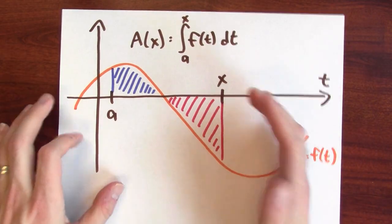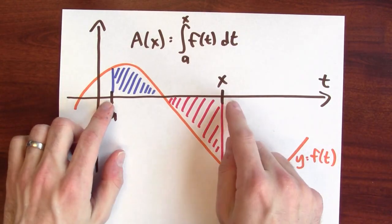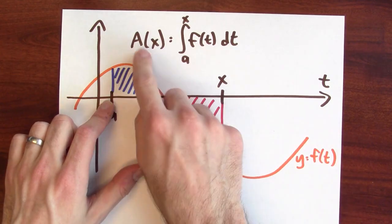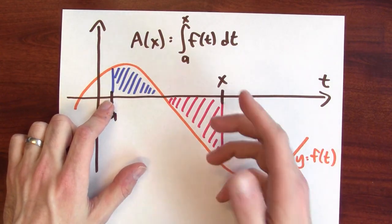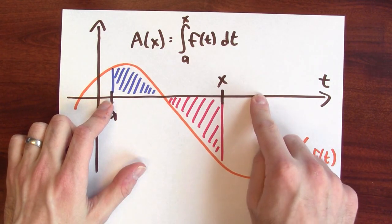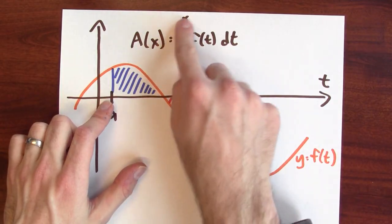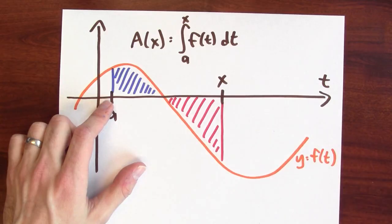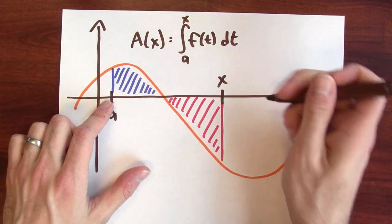All right, well, in light of that, what happens in this particular case? What happens if I plug in a bigger input to my accumulation function? Is it possible that I could integrate over a longer interval and yet get a smaller value? And yeah, this is an exact picture of the sort of situation where that happens.